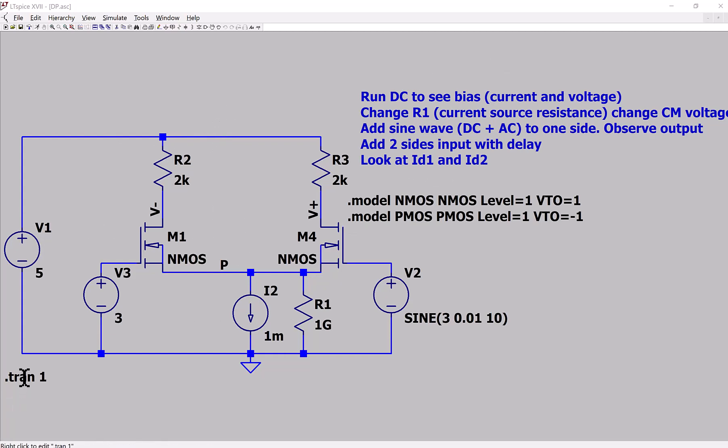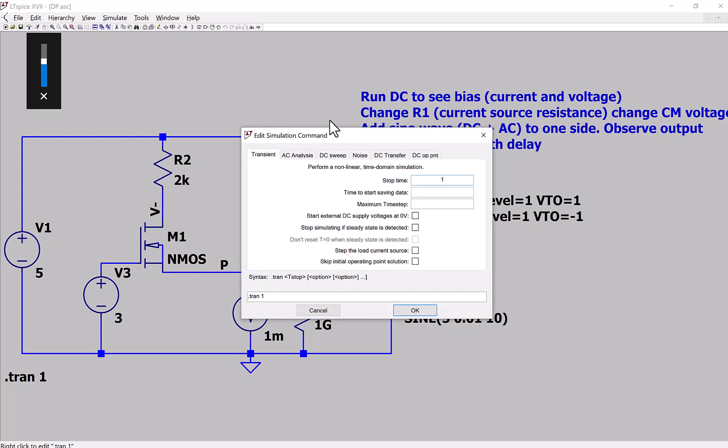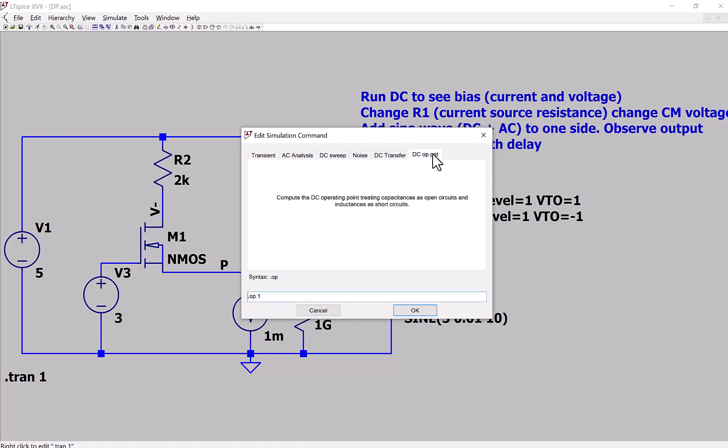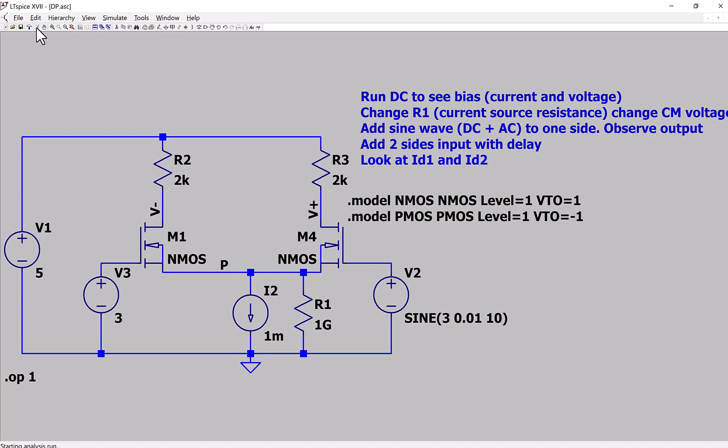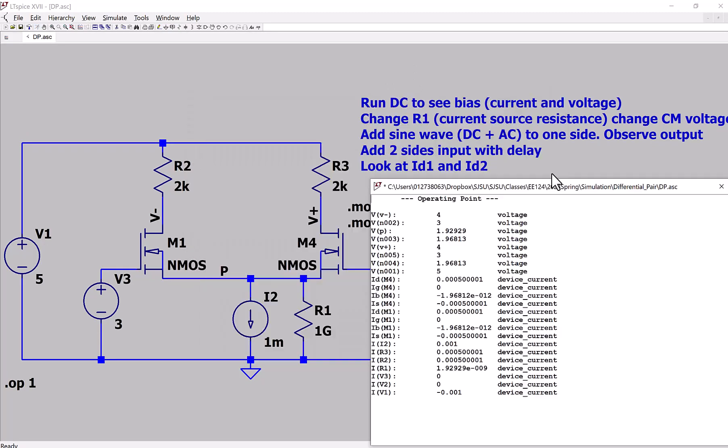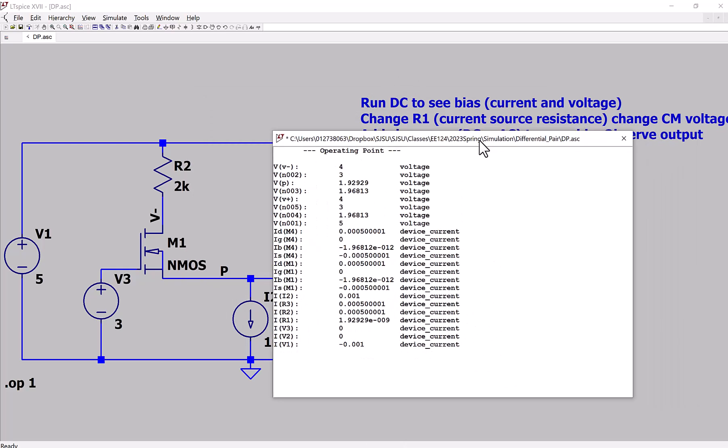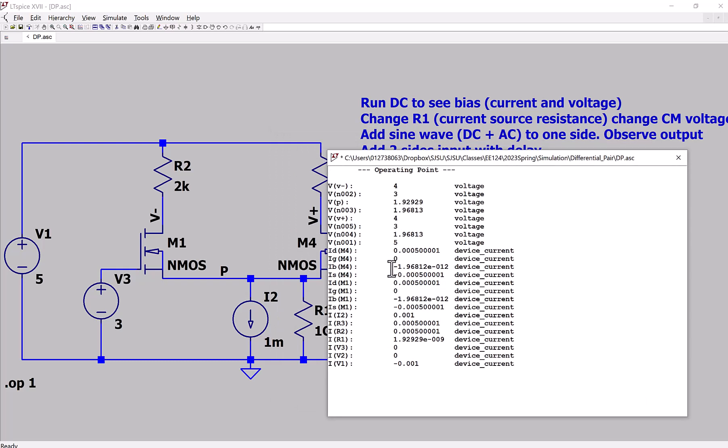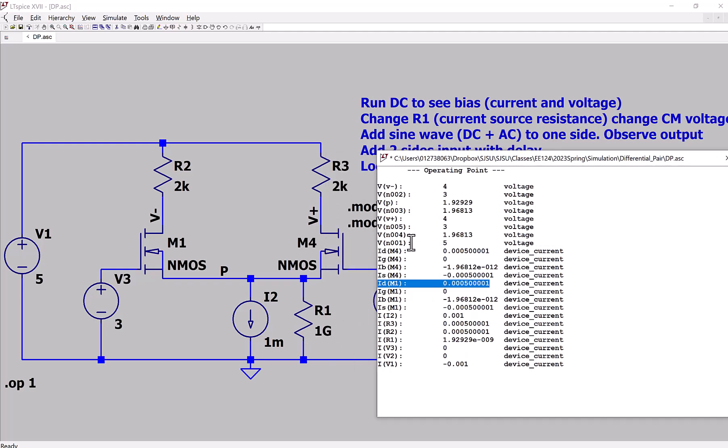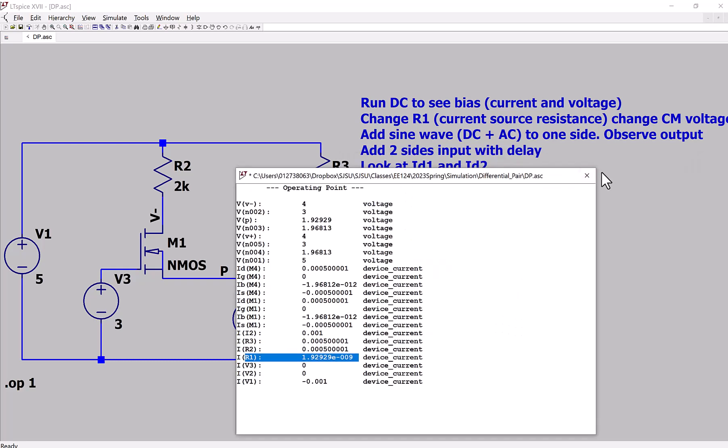So the first thing I want to do is to run the DC biasing. I'm going to put an operating point and then I just run it. So let's look at this. You can see that this is biased. And then I just want to show the current. This is 1 milliampere. What is the current in IDM4 on the right? And then the current on IDM1. It is larger than 0.5 milliampere. Do you see that? Because I have current going through the R1. Very tiny current, but that is because of this 1 gigaohm. That is the first thing.